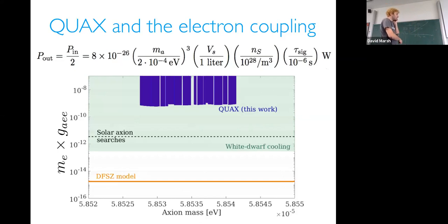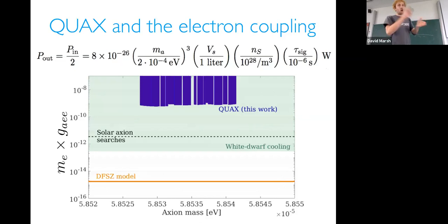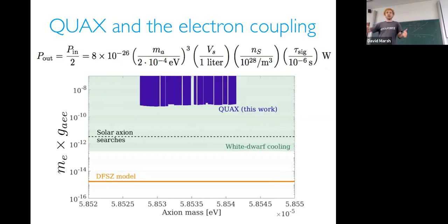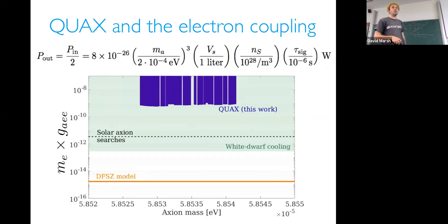QUAX is very interesting because it's charting a new coupling. If an axion is detected in any coupling, we want to look at multiple couplings to work out what model it is. If ADMX detected the axion at 10⁻⁶ eV, could you then detect the QCD axion dipole moment coupling with CASPER? Could you determine if it's KSVZ or DFSZ by detecting the electron coupling with QUAX? Once you know the frequency, experiments become much easier — you just make a fixed-frequency experiment. So it's all incredibly exciting.